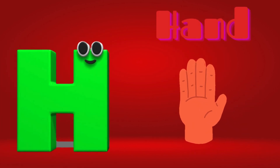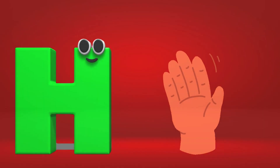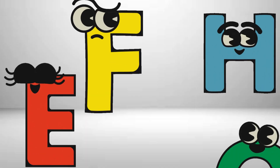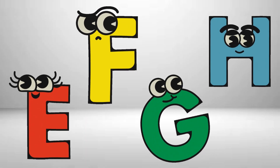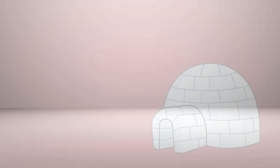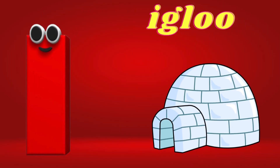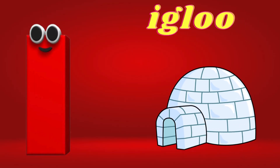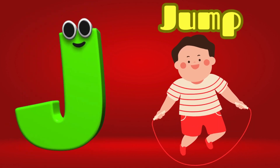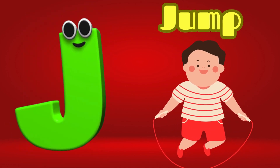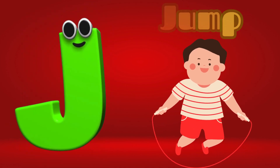H is for Hand, H-H-Hand. I is for Igloo, I-I-Igloo. J is for Jump, J-J-Jump.